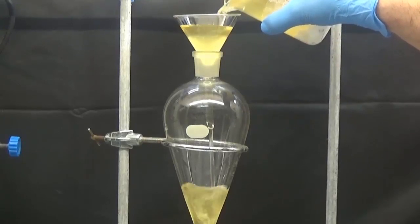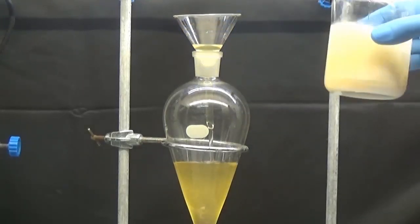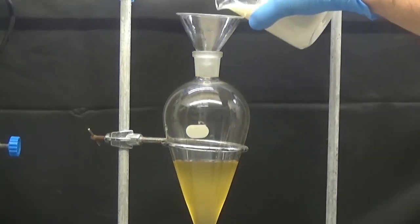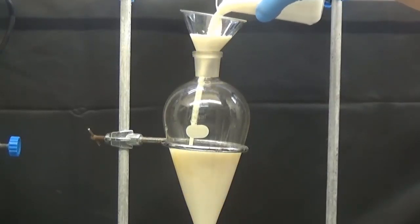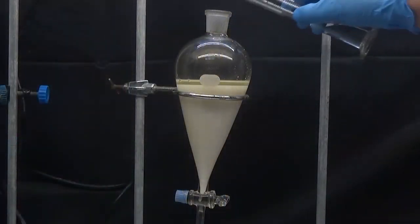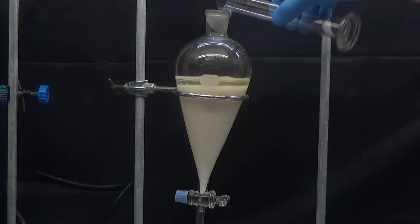We put the result in a separatory funnel, including the white precipitate. Wash two times with 50 milliliters of cyclohexane.